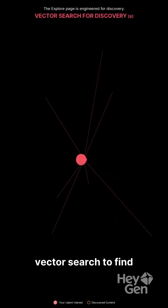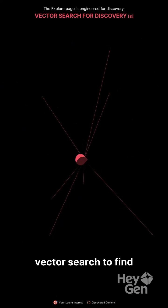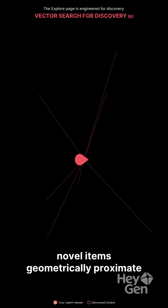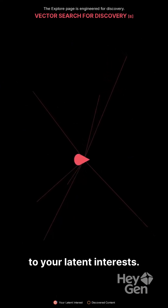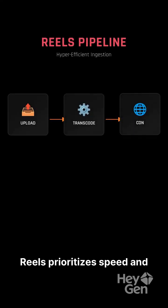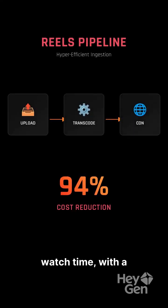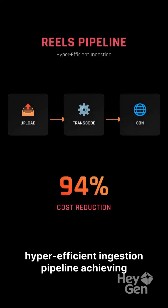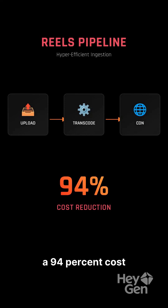The Explore page is engineered for discovery, using vector search to find novel items geometrically proximate to your latent interests. Reels prioritizes speed and watch time, with a hyper-efficient ingestion pipeline achieving a 94% cost reduction in encoding.